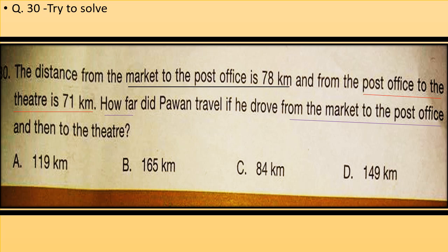Question number 30: The distance from the market to the post office is 78 km, and from the post office to the theater is 71 km. How far did Pawan travel if he drove from the market to the post office and then to the theater? Calculate the total distance traveled by Pawan.